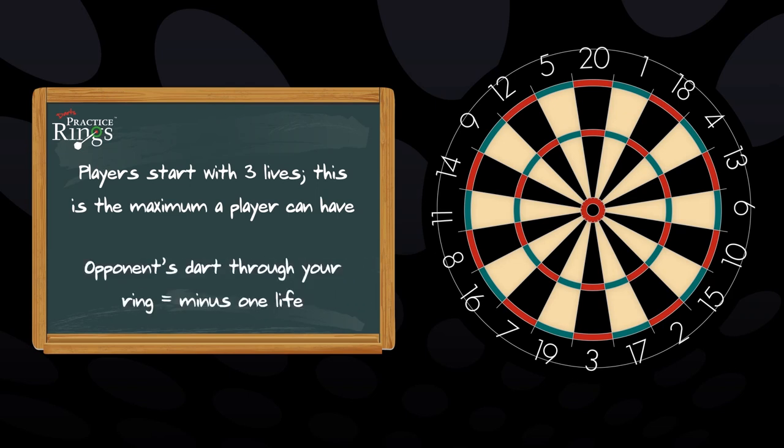Each time a player throws a dart through an opponent's ring, the player will lose a life. Each time a player throws a dart through their own ring, they will gain a life.